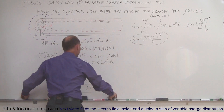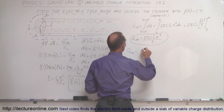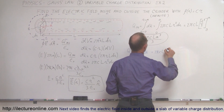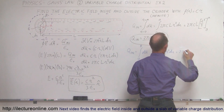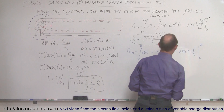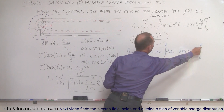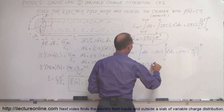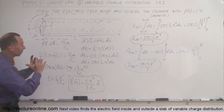Let's find Q inside for the outside case. Q inside equals all the little dq's from r equals 0 to r equals R: integral of 2πCL r squared dr from 0 to R, which equals 2πCL times r cubed over 3 evaluated from 0 to R. So Q inside equals 2πCL times R cubed over 3 — that's all the charge inside the cylinder.